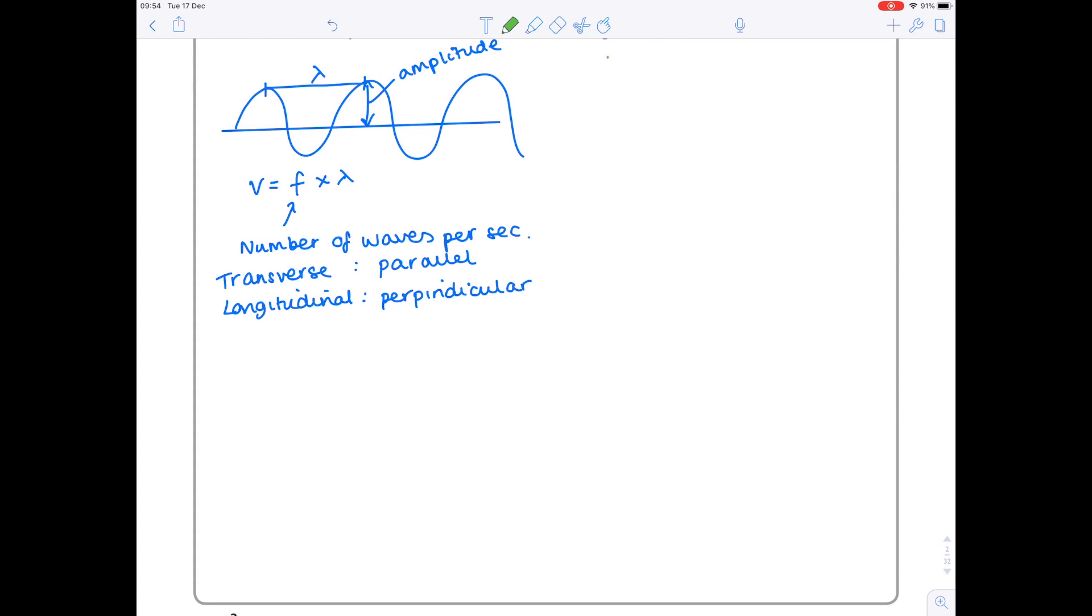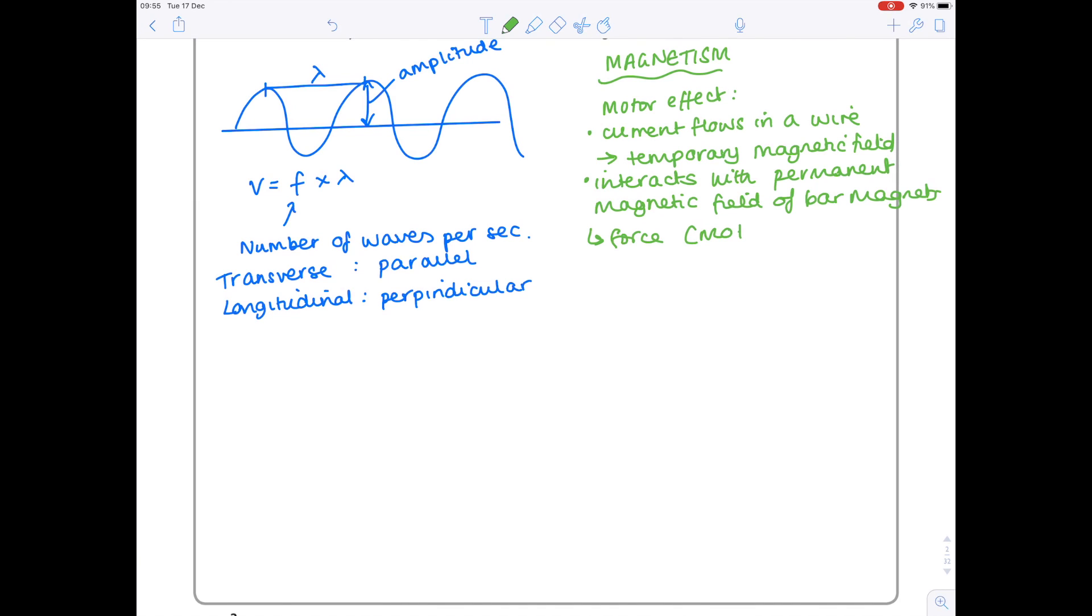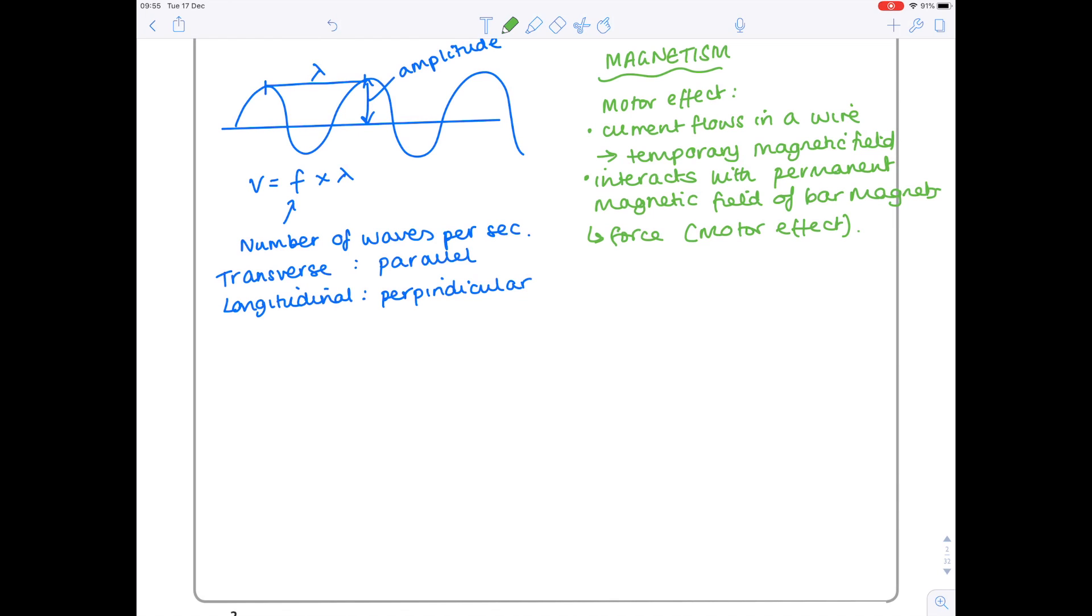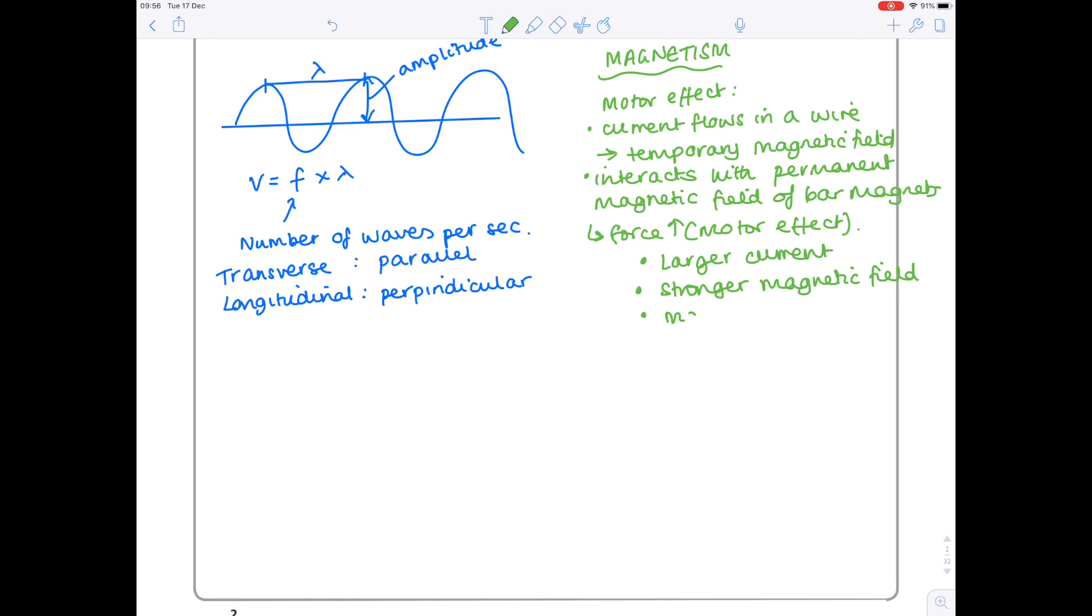One thing I know they love to ask about is magnetism. It's quite a hard topic. Here I'd probably write my perfect answer for the motor effect, which states that a current flows in a wire creating a temporary magnetic field. This interacts with the permanent magnetic field of the bar magnets which creates a force. To increase the force, we can use larger current, stronger magnetic field, or more turns on the coil.